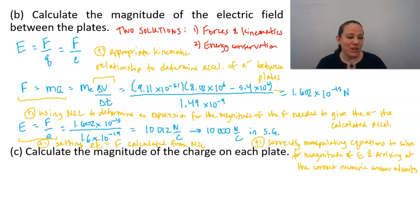So part C is calculate the magnitude of the charge on each plate. You hopefully remember that the electric field between a pair of oppositely charged parallel plates is equal to the charge on the plate divided by epsilon naught times A, the area of the plate, so we can say then that our charge will be equal to epsilon naught times A times E.